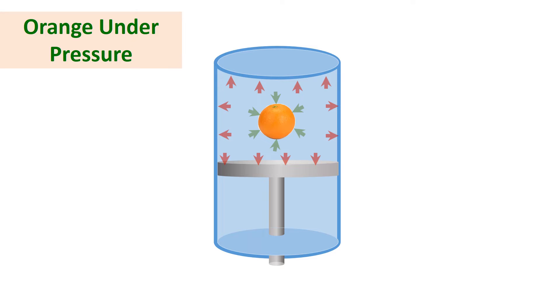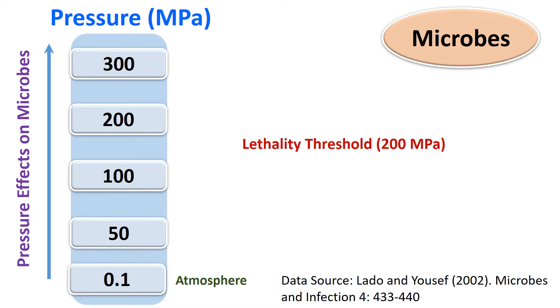HPP can inactivate microbes and enzymes. In addition, HPP has wide applications in food processing. Spores are more resistant to high pressure compared to vegetative cells. Different levels of applied pressure can cause different types of damage to microbial cells.